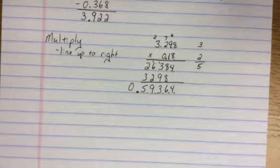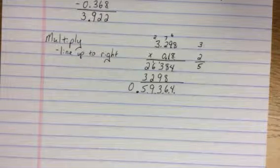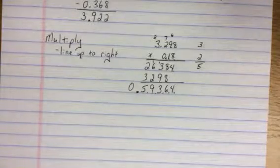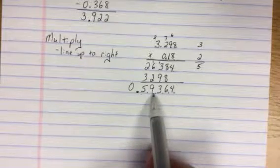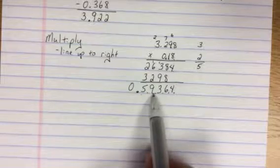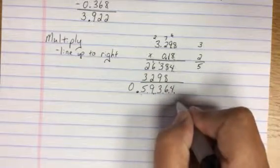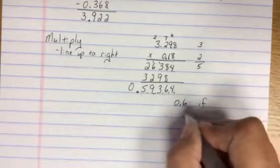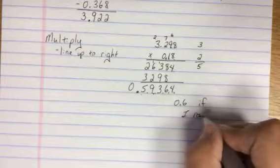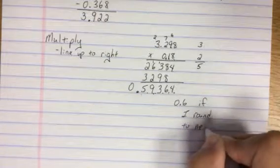Now if you watched the previous video, if it said round to the nearest tenth, I look at the 5. I look at the 9. The 9 tells me the 5 rounds up. So my final answer would be 0.6 if I round to the nearest tenth.